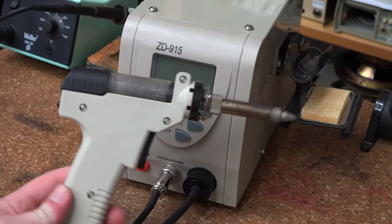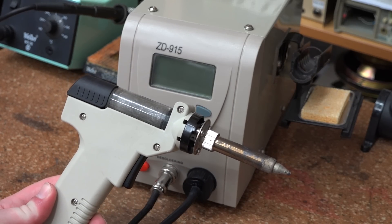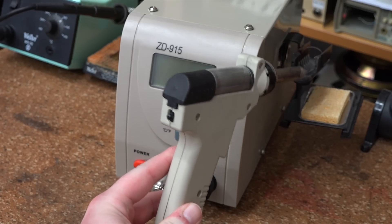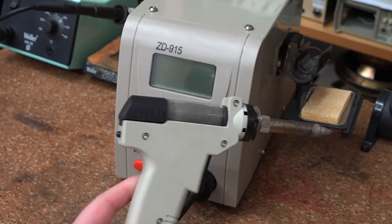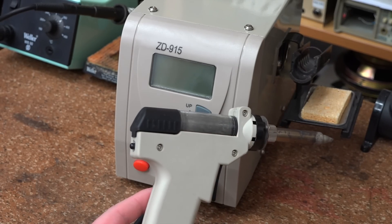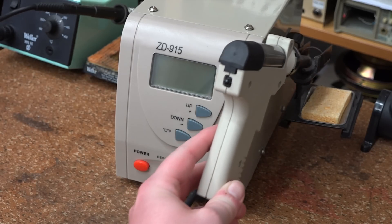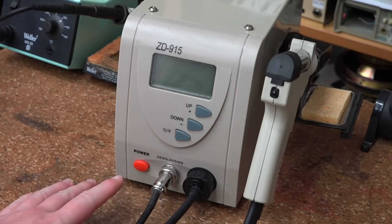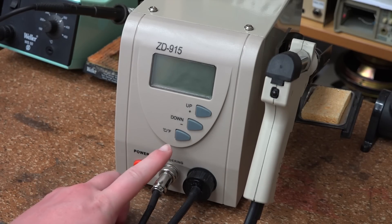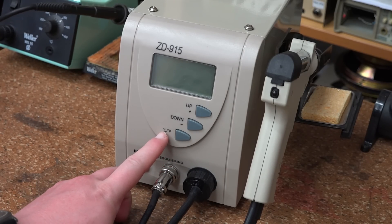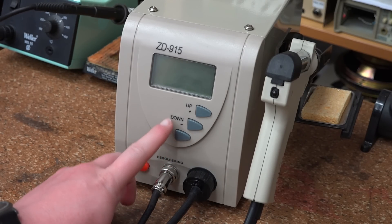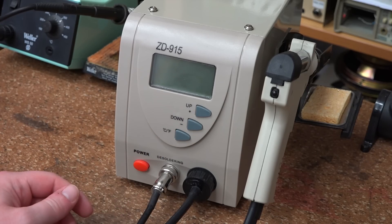You have the desoldering gun, obviously, and it does have a holder that mounts to the side. There is a sponge, which I don't use. I always use a sponge for the soldering iron, which you can see in the background. We have the power button, a selector switch for degrees Celsius or degrees Fahrenheit, and then temperature up and temperature down buttons.